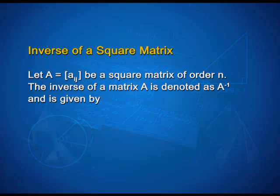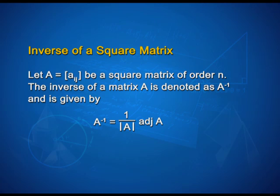Now students, let us see what is meant by the inverse of a square matrix. Let A be a square matrix of order N. The inverse of matrix A is denoted by A inverse and is given by A inverse equals 1 upon determinant of A, multiplied by adjoint of A.